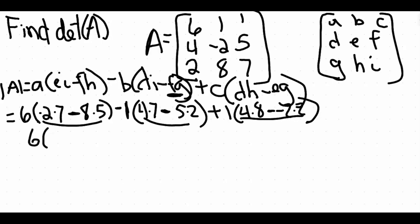Dropping down that 6, we have negative 2 times 7, which is negative 14, minus 8 times 5, which is 40. Then we have 4 times 7, which is 28, minus 5 times 2, which is 10, plus 4 times 8, which is 32, minus negative 2 times 2, which is negative 4.